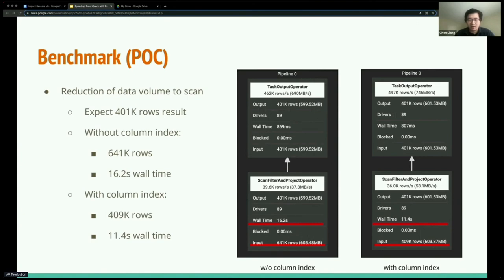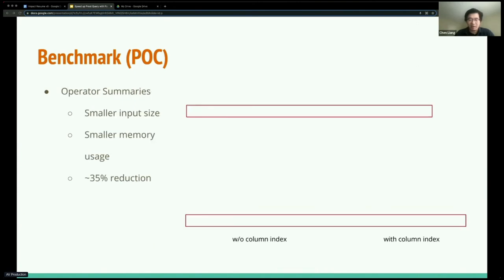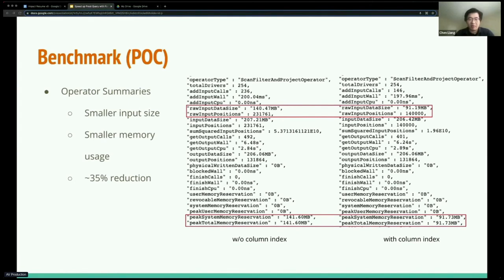On the next page, we're looking at the operator summaries, which we believe give more accurate numbers. I ran this query on just one node, by the way, just because this way I can collect the full aggregated stats on this one page. Here, as you can see, the output was the same. Both were 206 megabytes and the output was 131k rows.